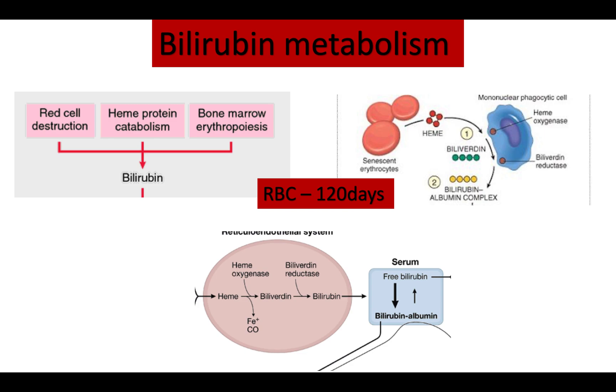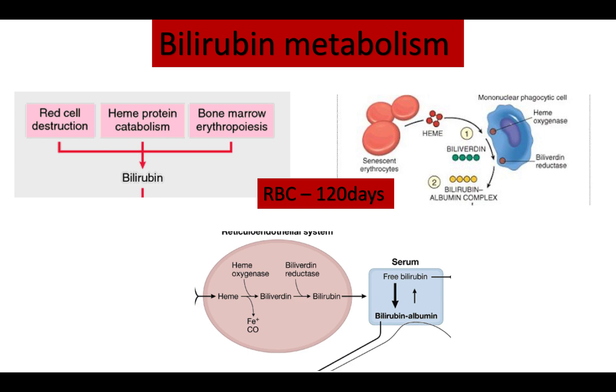You now have bilirubin in free serum — within your blood. Free bilirubin is neither lipid soluble nor water soluble, so in order to transport throughout the blood it needs to attach to something. It attaches to the most abundant protein in the blood, albumin, forming the unconjugated bilirubin-albumin complex.